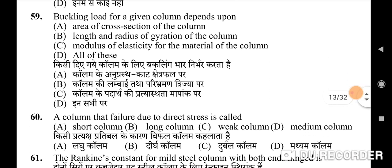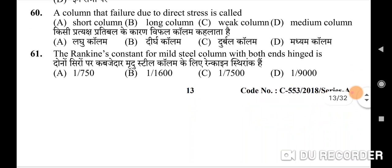Fifty-ninth question: buckling load for a given column depends upon — correct option is D: all of these — the area of cross-section, the length and radius of gyration, and the modulus of elasticity of the material. Sixtieth question: a column that fails due to direct stress is called — correct option is A: short column.